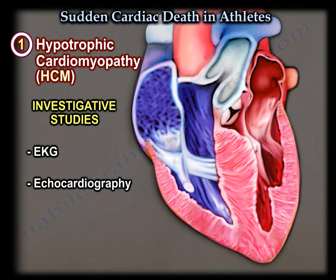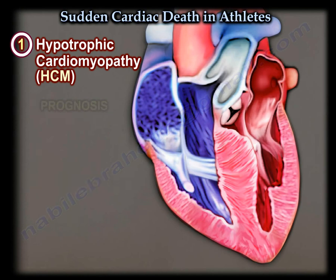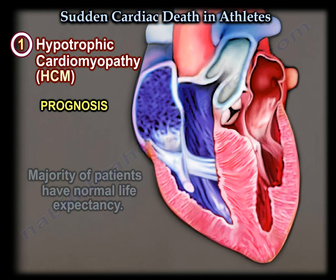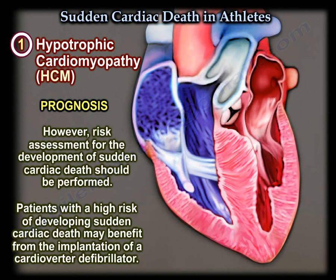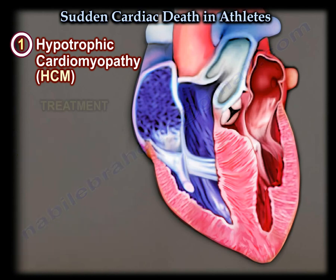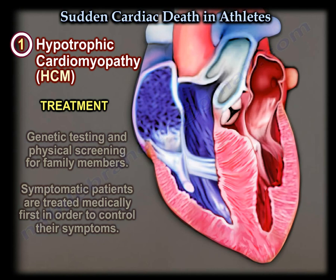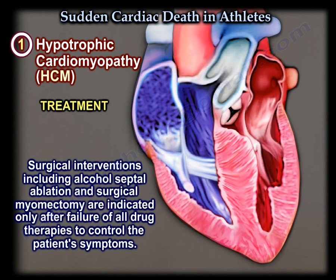Investigational studies include EKG and echocardiography. Fortunately, the majority of patients have a normal life expectancy. However, risk assessment for the development of sudden cardiac death should be performed. Patients with a high risk of developing sudden cardiac death may benefit from the implantation of a cardioverter defibrillator. Vigorous exercise should be avoided in all patients with hypertrophic cardiomyopathy. Genetic testing and physical screening for family members could be helpful for early detection. Symptomatic patients are treated medically at first. Surgical interventions including alcohol septal ablation and surgical myomectomies are indicated only after failure of all drug therapies to control the patient's symptoms.